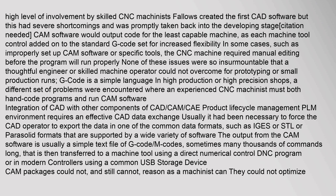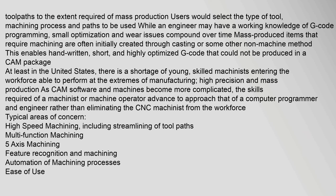The output from the CAM software is usually a simple text file of G-code and M-codes, sometimes many thousands of commands long, that is then transferred to a machine tool using a direct numerical control, DNC, program, or in modern controllers using a common USB storage device. CAM packages could not, and still cannot, reason as a machinist can — they could not optimize toolpaths to the extent required. Mass production users would select the type of tool, machining process, and paths to be used.